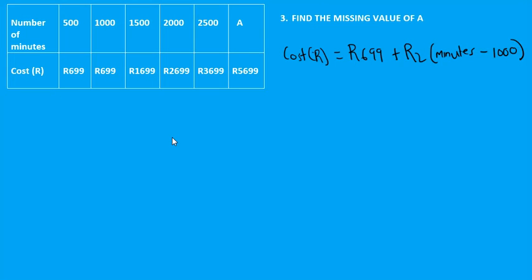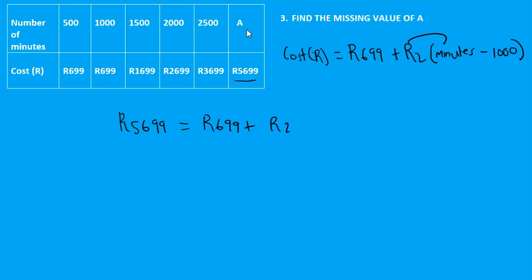For question three, we have to find 'a', and this is an inverse question because we work backwards. We are given the cost of R5699 but we don't know how many minutes were used. We substitute into the equation: 5699 = 699 + 2(a − 1000), which expands to 5699 = 699 + 2a − 2000.